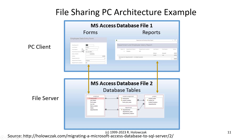And another file that contains the application—the user interface and the business logic. These two database files can then communicate with one another over a local area network. This is probably the easiest way to share data, scaling up from a standalone PC to the file sharing architecture.